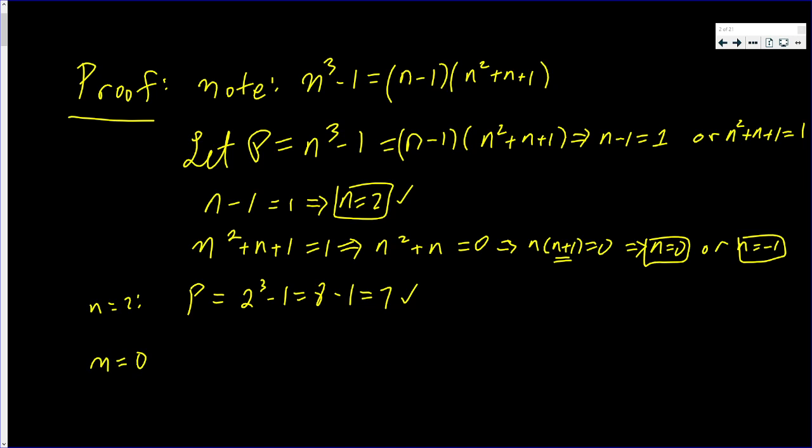Now, if n is equal to 0, that means P is equal to 0 cubed minus 1, which is 0 minus 1, which is negative 1. Negative 1 is not a prime number. Prime numbers have to be 2 or more, so it can't be that.